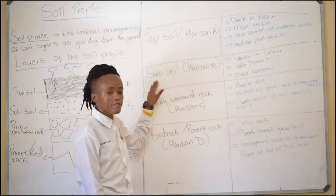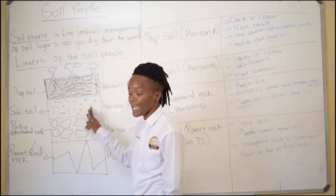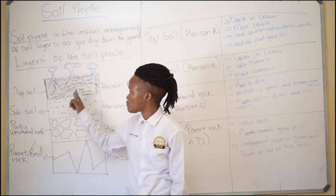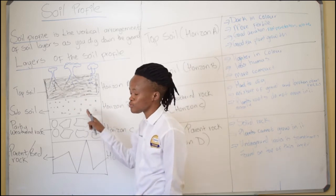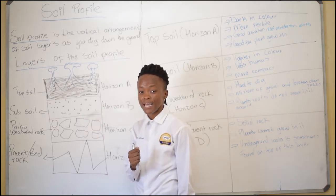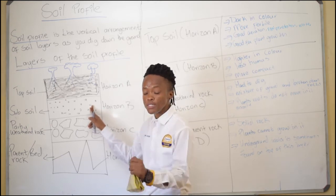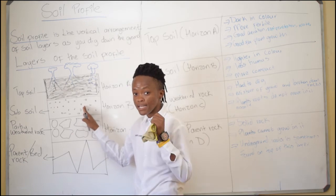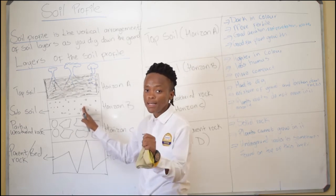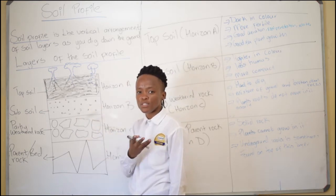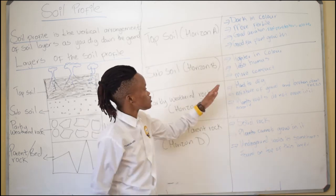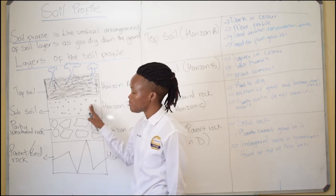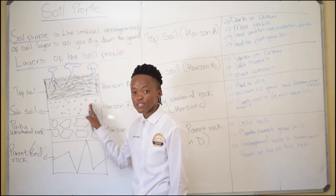The next layer is subsoil, which is the second layer after topsoil. Subsoil is light in color. Compared to topsoil, subsoil is lighter in color, which means that subsoil has less humus — and as stated, less humus means less nutrients. If it has less nutrients, some crops may grow in it but others won't, because it has little humus. Subsoil is also more compact compared to topsoil, which means that root penetration, water retention, and aeration are not as good as in topsoil.